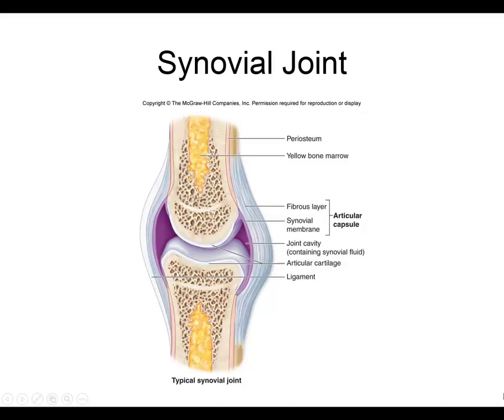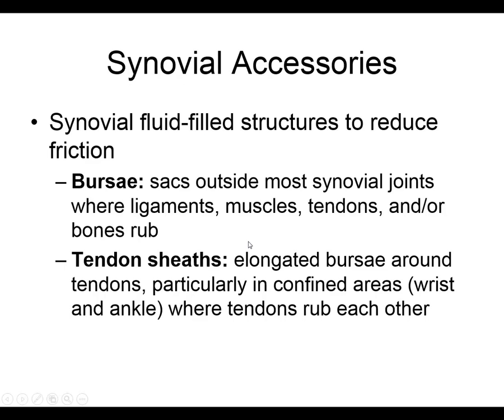We will also talk about the accessory structures of the synovial joint, then make another video for the specialized types of joints and different movements — flexion, extension, adduction, abduction — which we've dealt with before. The accessory structures are outside the joint — not part of it — but they help the joint.